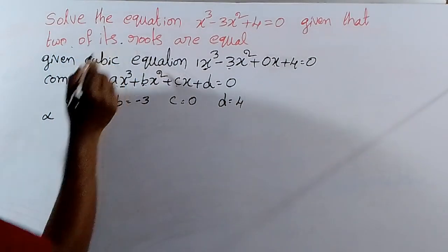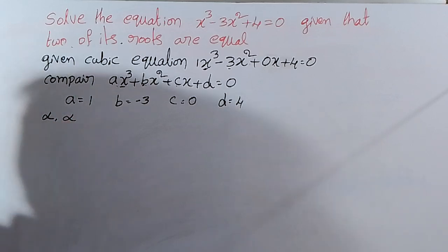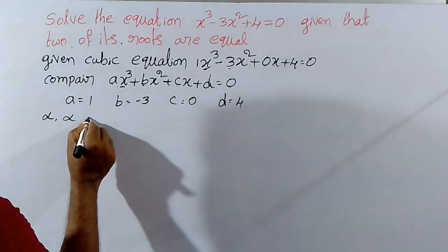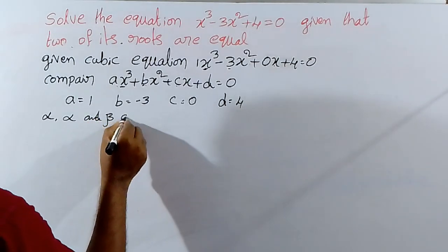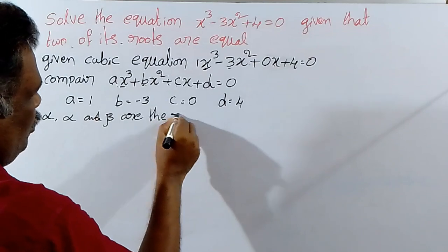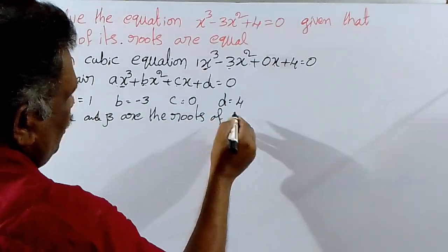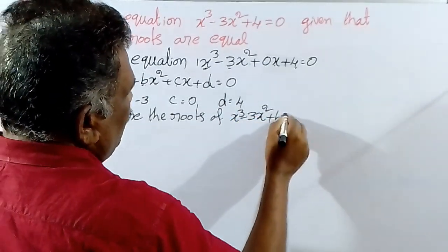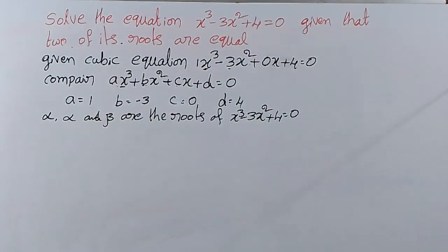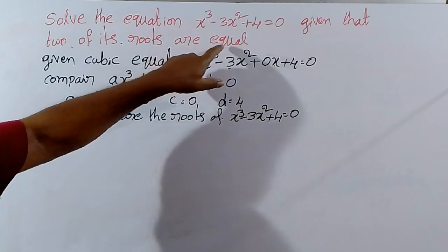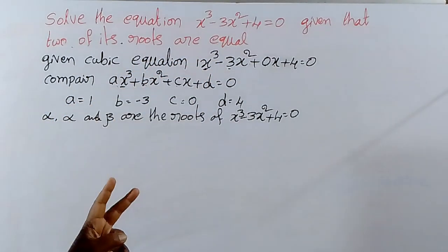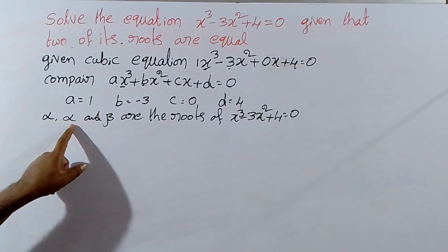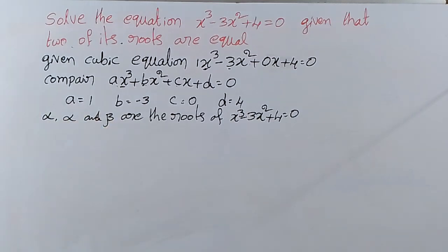Two roots are equal. So one root alpha, second root is also alpha — alpha and alpha and beta. The roots of x cube minus 3x square plus 4 equal to 0. Three roots are possible. In general, alpha, beta, gamma — but given that two of its roots are equal. So two roots are equal: first root alpha, second root alpha, third root beta.